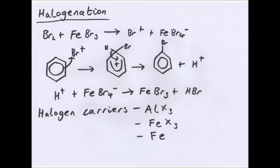You get Br2 plus AlBr3 becomes Br+ plus AlBr4-. The reaction occurs, you get a proton, proton reacts with the FeBr4-, creating that plus hydrogen bromide.